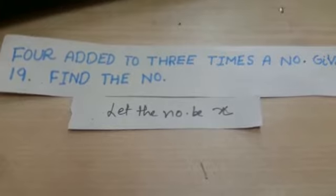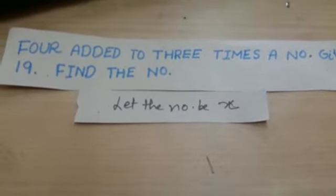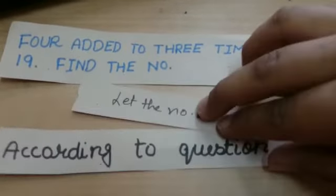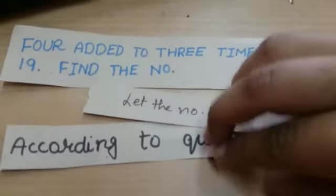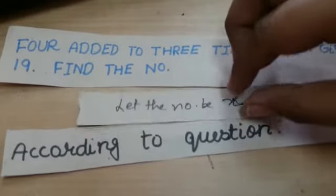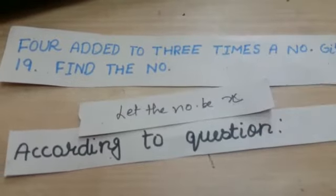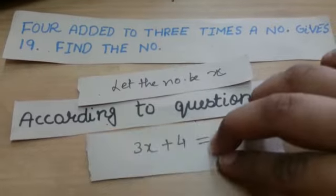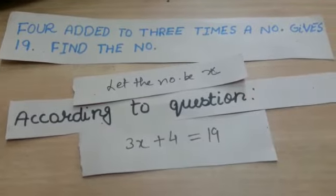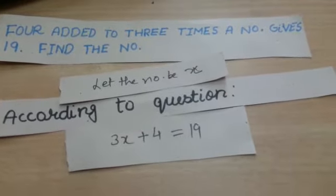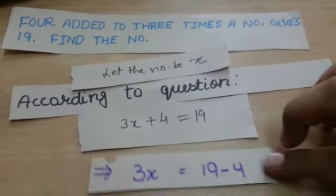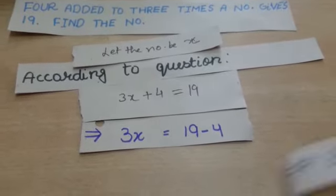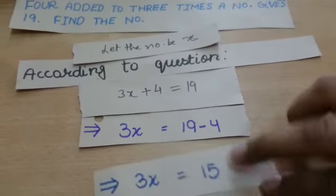According to the question, it will be 3x plus 4 equals 19. Now we will transpose 4 to the RHS and it will convert into minus 4. This will give 3x equals 15.